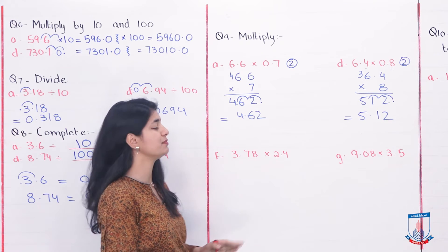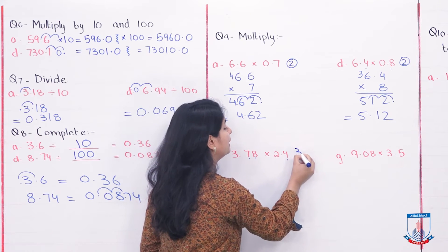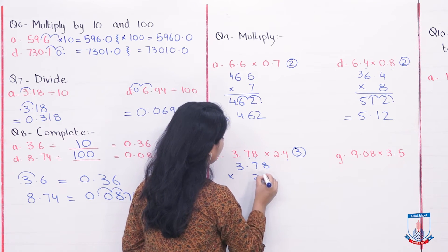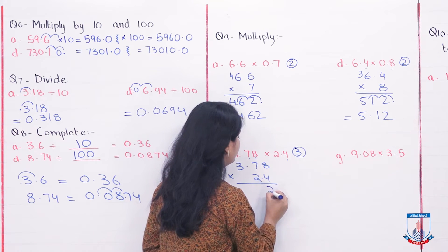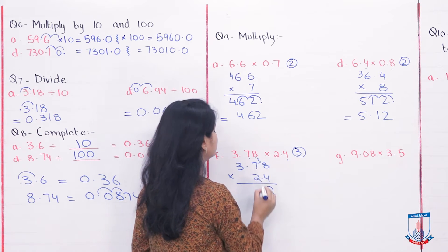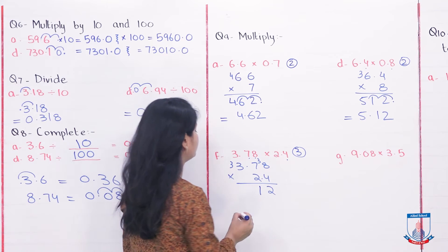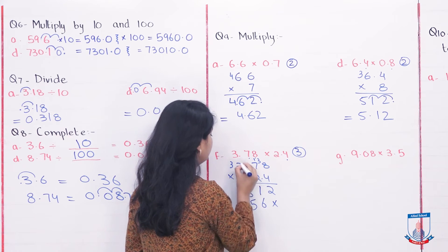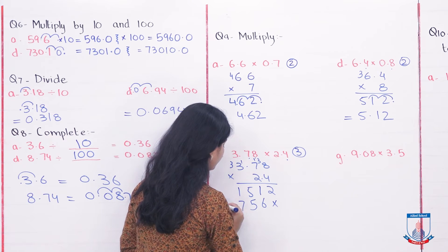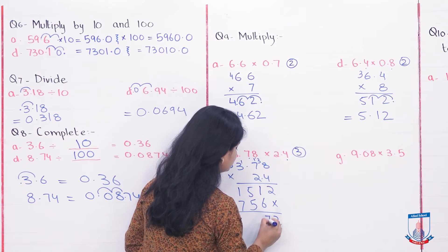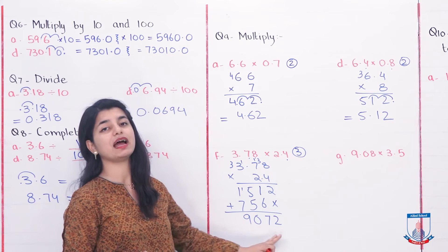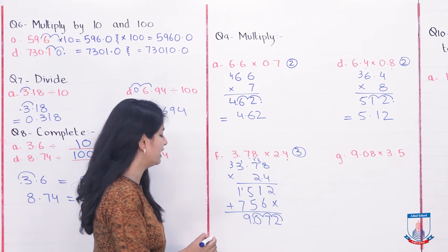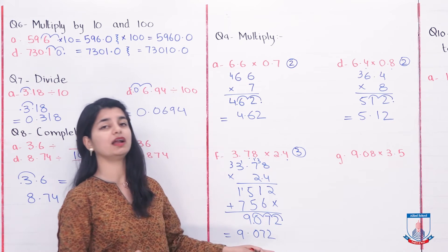If we look at part F, we count it: 1, 2, 3 — so here we will have 3 decimal places incorporated in our answer. We will solve: 3.78 into 2.4. 4 into 8 is 32, 3 carry. 4 into 7 is 28 plus 3 is 31, 3 carry. 4 into 3 is 12 plus 3 is 15. Then cross-multiplying: 2 into 8 is 16, 1 carry. 2 into 7 is 14 plus 1 is 15, 1 carry. 2 into 3 is 6 plus 1 is 7. Adding them: 2, 7, 0, 1 and 9 — so your answer is 9072. There are 3 decimal places: decimal 1, 2 and 3 — so it will be after 9. Your answer is 9.072 for part F.